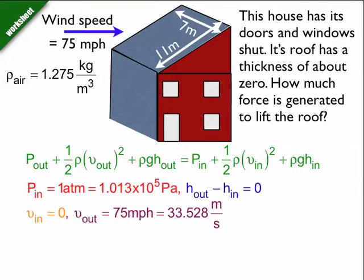The velocity of the air inside the house, well if it's closed up, it's not moving at all, so the velocity is zero. But outside the house, the air is moving at 75 miles per hour, or at 33.528 meters per second once we convert it over.